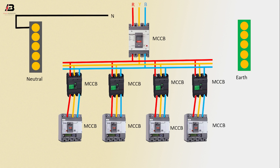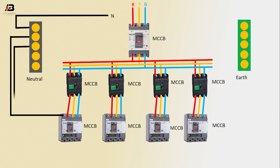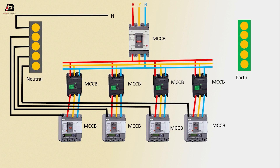Neutral connection input to neutral bus bar. Output connection neutral from neutral bus bar to connect MCCB. Another output connection to another MCCB, again another MCCB, and again another MCCB neutral connection. Earthing connection input to earthing bar.